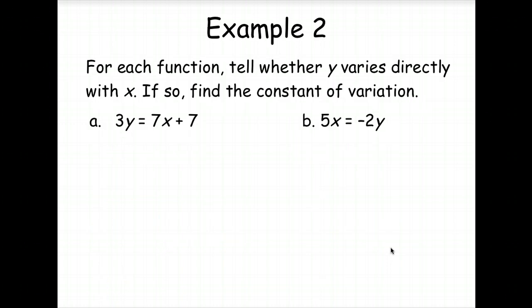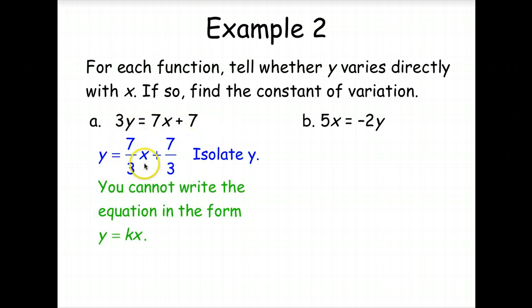For each function, tell whether Y varies directly with X. And if so, find the constant of variation. Well, the first thing we need to do is solve for Y. So we're going to isolate the Y. We divide every term by 3. This one cannot be written in the form Y equals KX. So it does not vary directly with X.